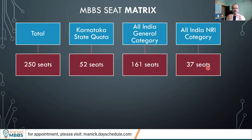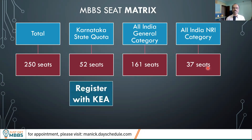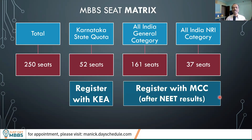For the Karnataka state quota seats, only Karnataka residents are eligible — you must be a resident, domicile, or native of Karnataka. If you are from another state, you can target the All India seats, where both Karnataka and non-Karnataka students are eligible. Karnataka state quota students register with KEA; for All India general or NRI category, you register with MCC after NEET results. There is no reservation applicable under the general category.